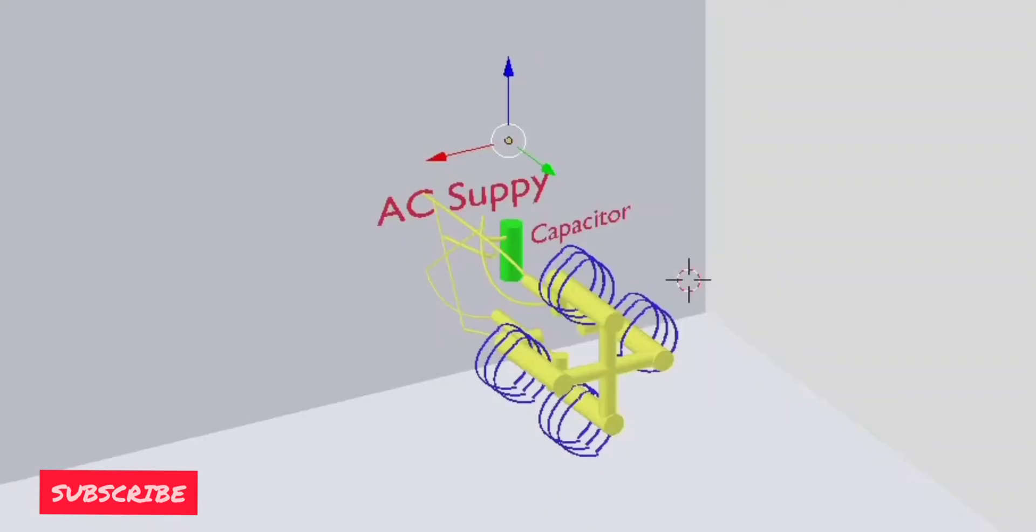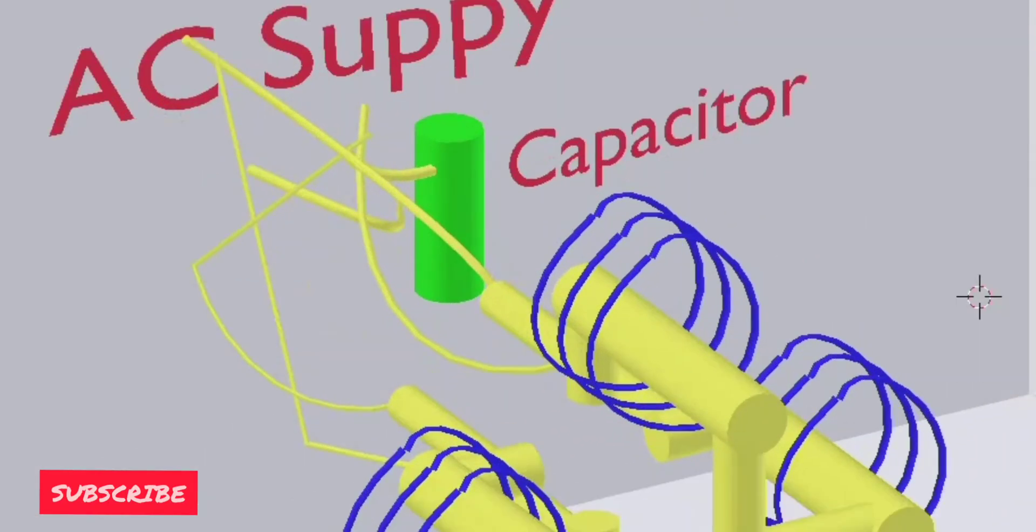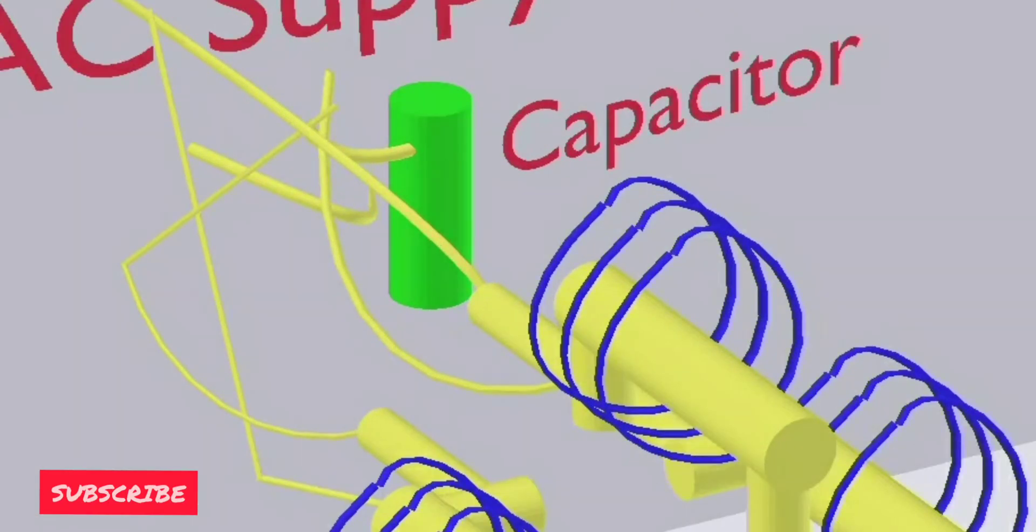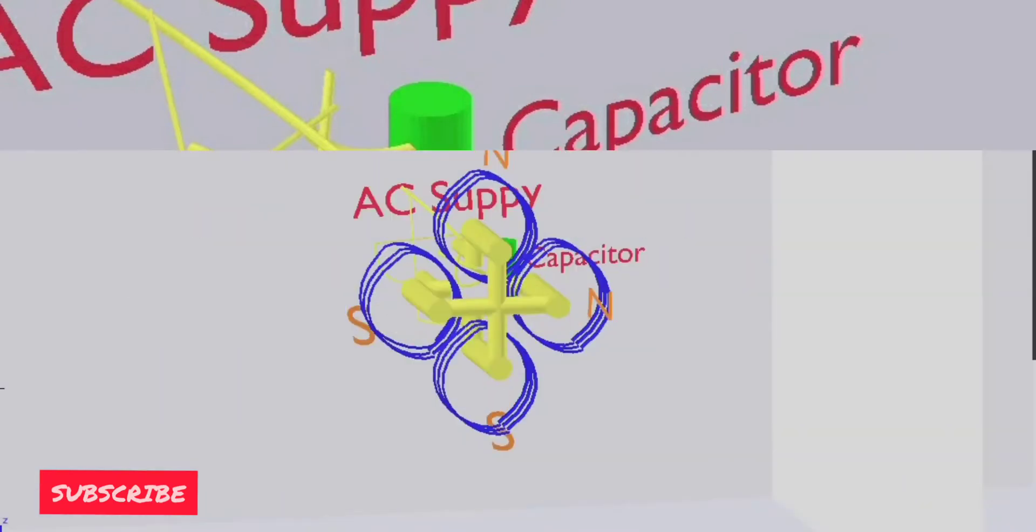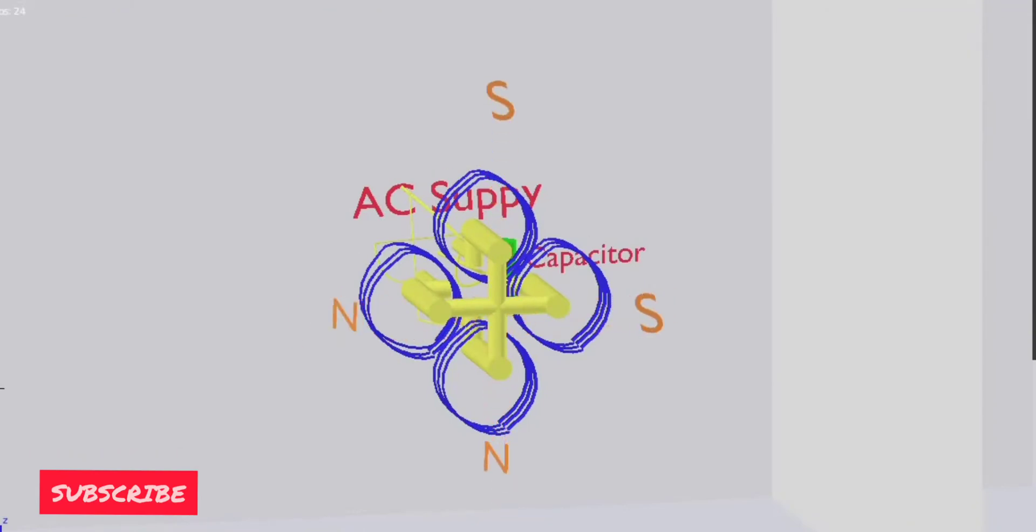Now I am adding a capacitor to the supply line of the second coil so that we can pass the current at 90 degree phase difference to the first coil supply. Because of that, magnetic poles of both coils change in proportion to each other.